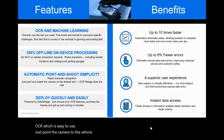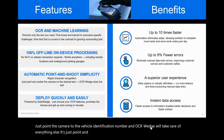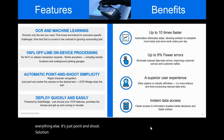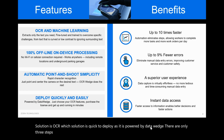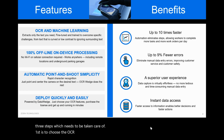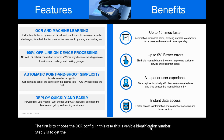OCR Wedge is easy to use — just point the camera to the vehicle identification number and OCR Wedge will take care of everything else. It's a point-and-shoot solution. OCR Wedge is quick to deploy as it is powered by DataWedge. There are only three steps: first, choose the OCR config — in this case, vehicle identification number; step two, get the license; and then you're good to go. It is as simple as it gets.